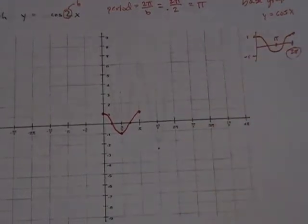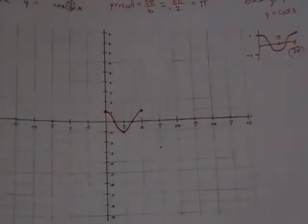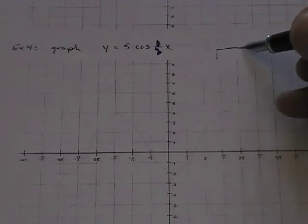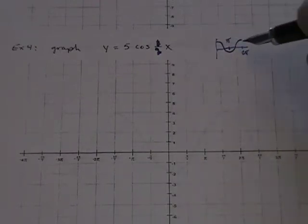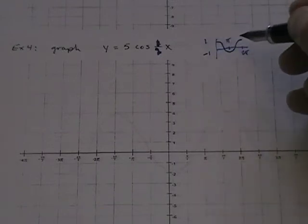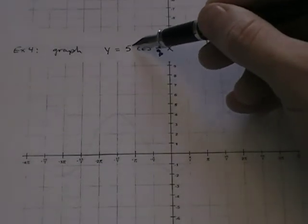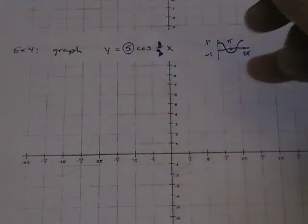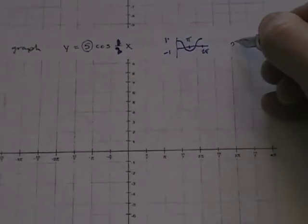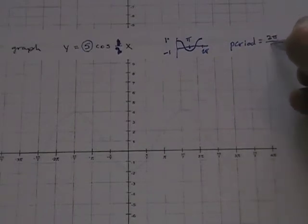What if we combine both? Let's graph y equals 5 cosine of one half x. The base cosine graph starts at a height of one, reaches a valley of negative one, and takes two pi to make one cycle. The 5 stretches it vertically, so instead of a height of one it's now going to have a height of five. The one half gives a period of two pi over one half, which is four pi — a horizontal stretch.